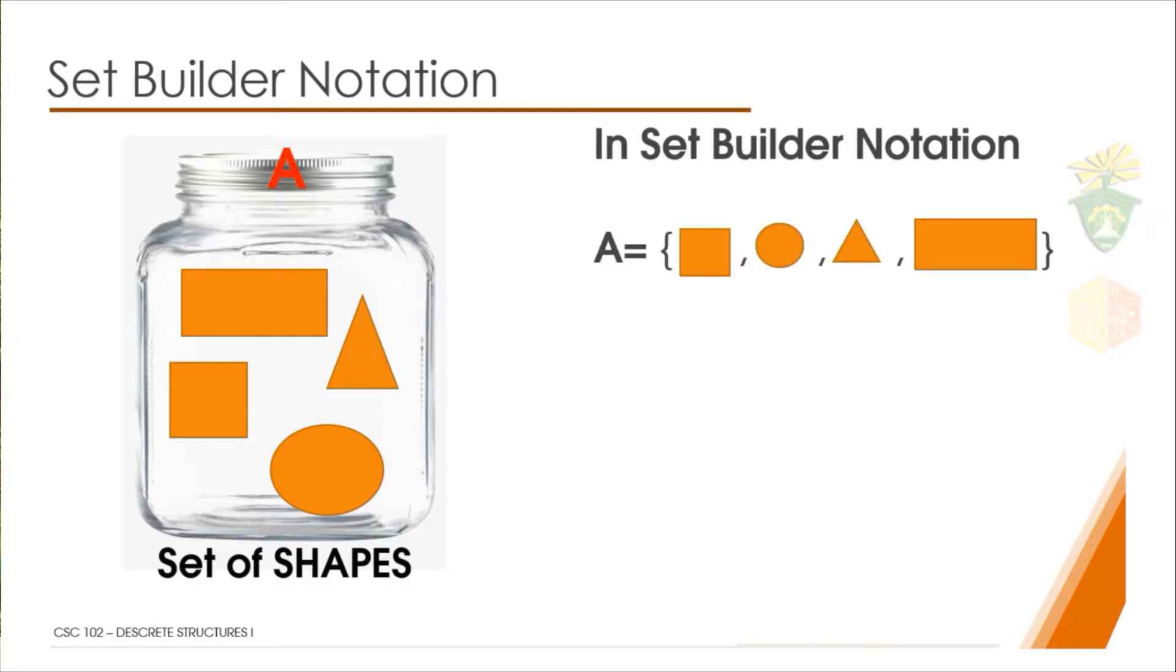If we write set A using a set builder notation, it will look like this, where the objects enclosed in curly braces are the elements of the set, equated to the set name, which is A.